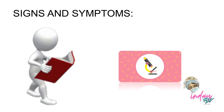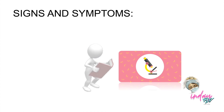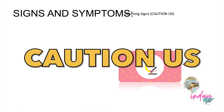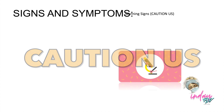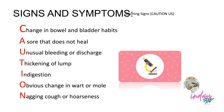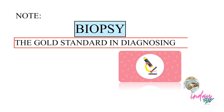The last topic in this overview is the signs and symptoms. We have the mnemonic CAUTION US: Change in bowel and bladder habits; A sore that does not heal; Unusual bleeding or discharge; Thickening or lump; Indigestion; Obvious change in wart or mole; Nagging cough or hoarseness of voice; Unexplained anemia; and Sudden weight loss. Remember also that the gold standard in diagnosing cancer is biopsy.